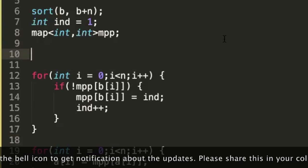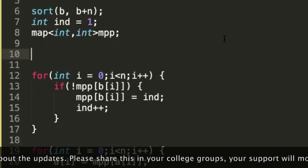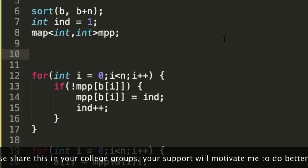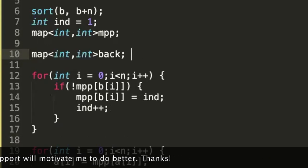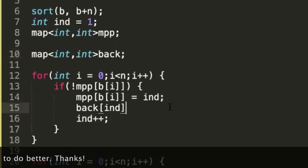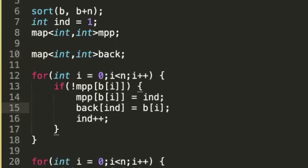Now let's say for some reason you want to get back to the original number, so you need to store that mapping too. So what you can do is you can map that thing in some other map. Let's say you map it in some back. We can easily write here back of index will always be equal to B of I. Now index, that is the new number,